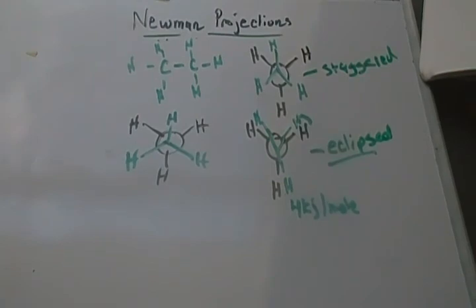But that's really it for Newman projections. It's just you keep turning it 60 degrees and seeing which one is more stable based on the interactions that occur. And you always want a staggered state over an eclipsed state.